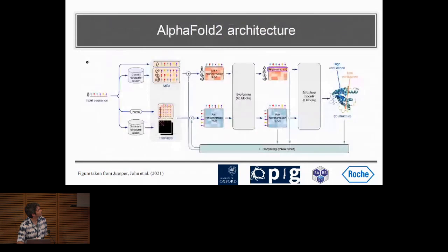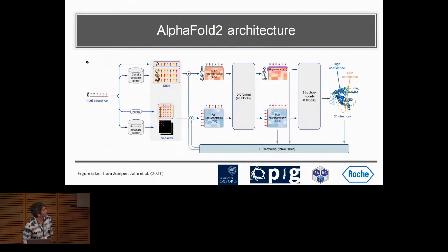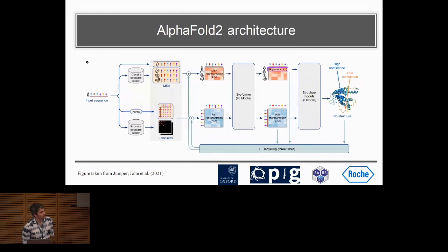I've got the plot from the AlphaFold 2 paper here showing the architecture. Our idea was: how can we speed this up — speed it up a lot? That was basically the objective for antibody structure prediction.